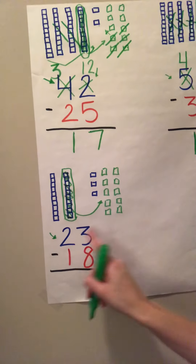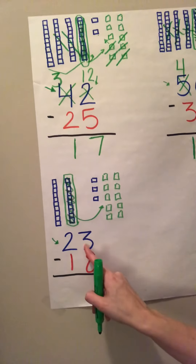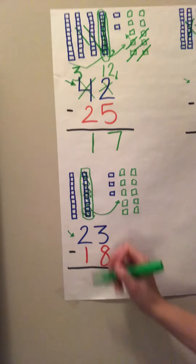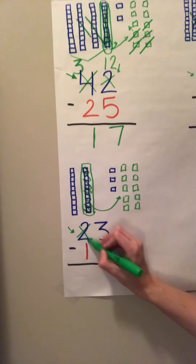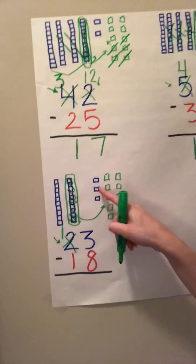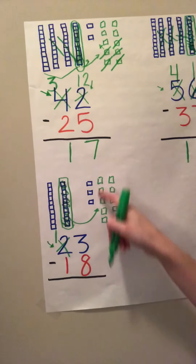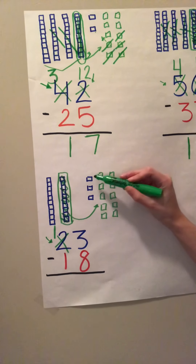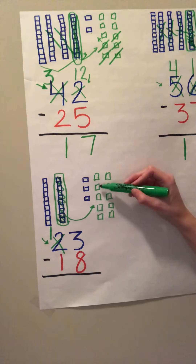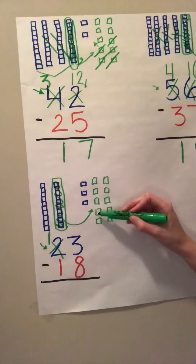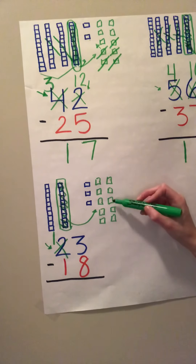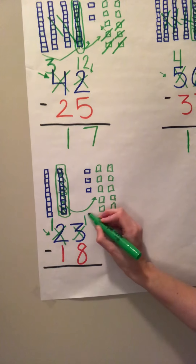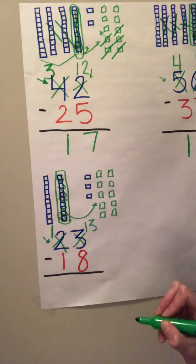All I'm doing is separating that group of ten into ten individual one cubes, so it's no longer a group of ten. Now before we get started, we have to fix our problem up here. We no longer have two tens — we only have one ten. And we don't only have three ones now; we have thirteen ones, because we added ten more.